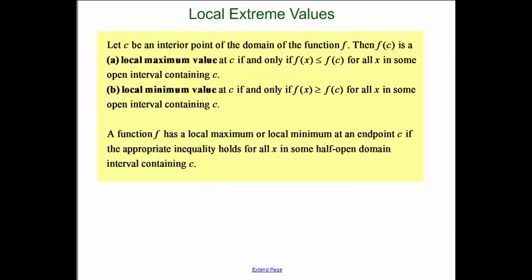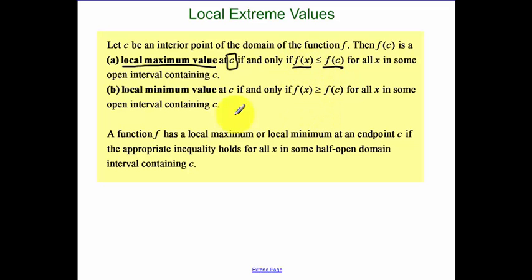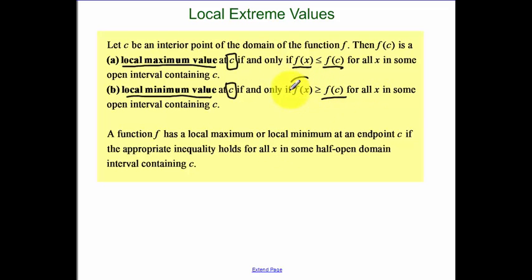Here's something of a more formal definition. You have a local max at an x value c if the y value f(c) is greater than every other function value around it. We have a local minimum at some x value c if all the other y values around it are greater than that f(c).